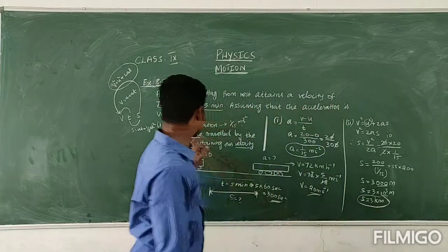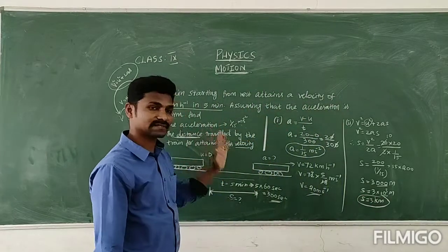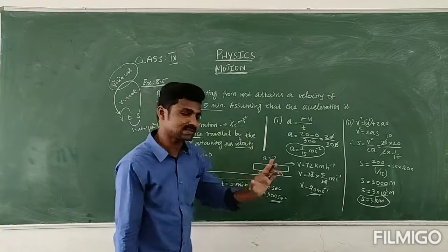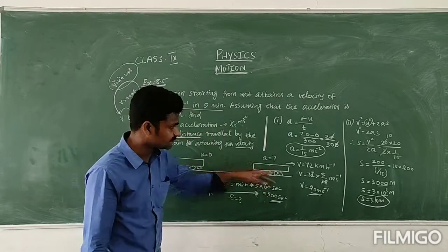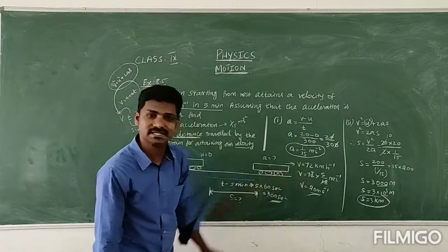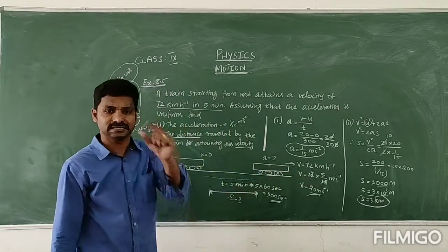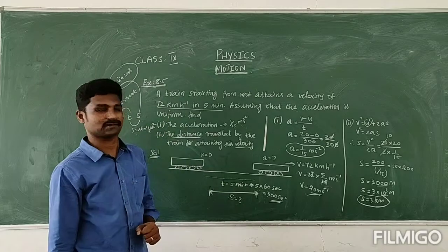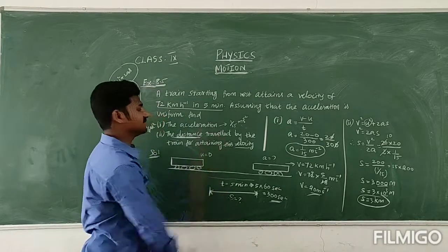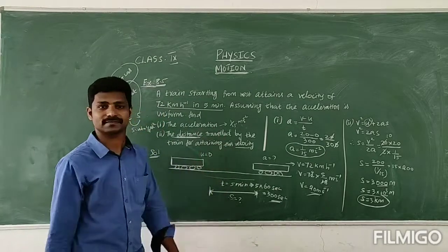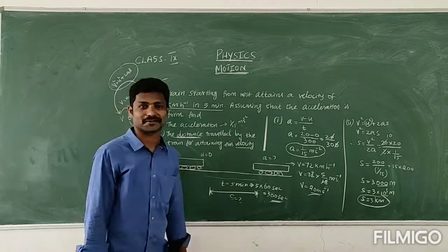Therefore, the distance covered by the train to attain that velocity — how much distance covered? 3 kilometres covered. So the answer is 3 kilometres. Thank you.